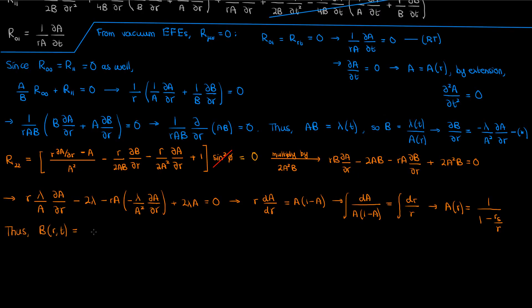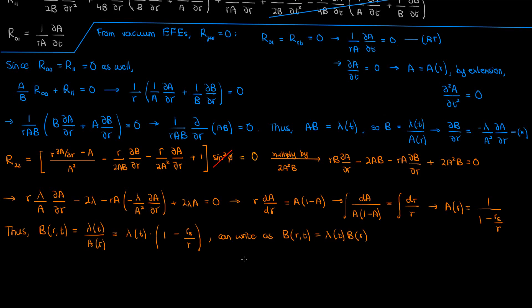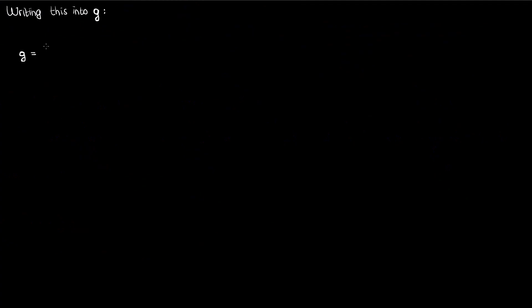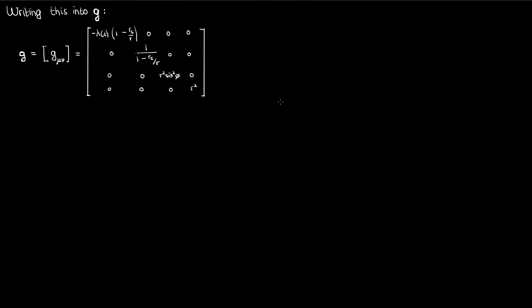This means B(R, T) = λ(T)/A, where A is exclusively a function of R. Another way to write B is λ(T)·B(R), where B(R) is the same radially dependent metric tensor component we had for our static spherically symmetric spacetime. So writing down our solutions for B and A in our metric tensor ansatz gives us the metric for a time-dependent but spherically symmetric spacetime. The λ(T) factor prevents the metric from being time-independent, but we can actually get rid of it with a coordinate transformation.